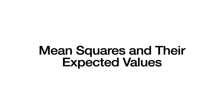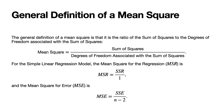Let's first review the mean squares and their expected values. The general definition of a mean square is that it is the ratio of the sum of squares to the degrees of freedom associated with the sum of squares. For the simple linear regression model, the mean square for regression, denoted MSR, is equal to the sum of squares for the regression divided by the degrees of freedom associated with that sum of squares, which is one.